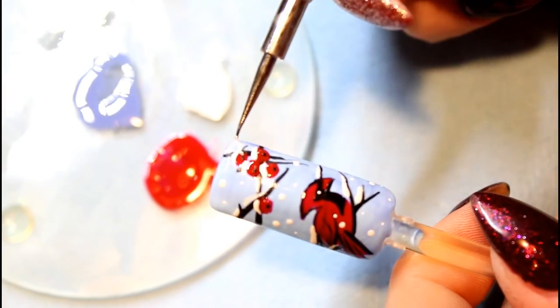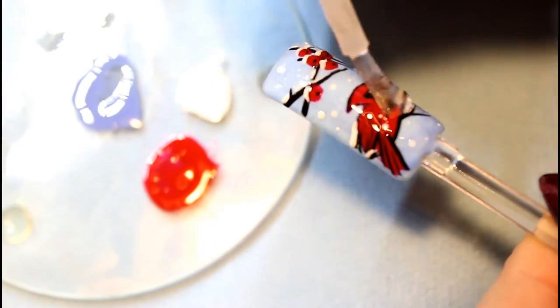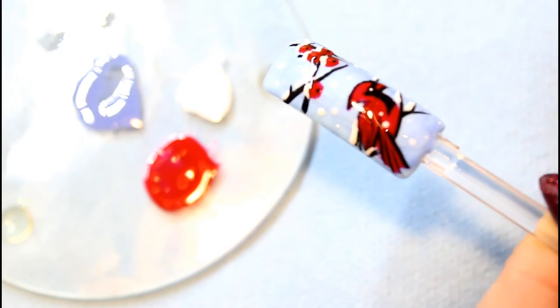When you're done, cure your light for 30 seconds. Apply a coat of top coat, then cure for 30 seconds.